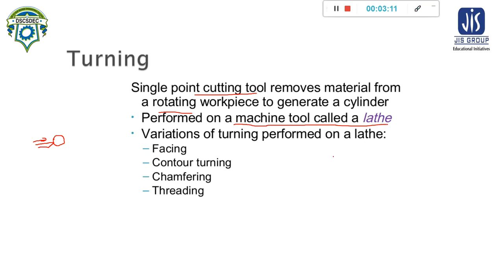There are various turning operations that can be performed on the lathe. Those are: facing, contour turning, chamfering, and threading. Besides these operations, there are some other operations such as knurling, taper turning, and step turning. These are all the operations that can be done using the lathe. Now we will see about these operations one by one.